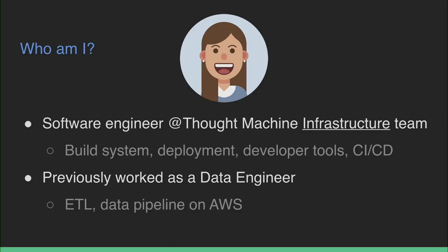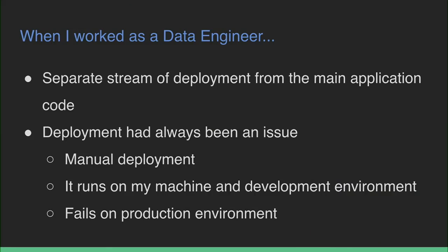At that time I didn't really do much about automated deployments — everything was kind of manual. So here is what happened. I work in a specific data team called Data Labs, and we had a separate stream of deployment from the main applications, including stuff like our front end or our API. Everything was quite separate, and the main issue was deployments. Sometimes things would run on my machine or even in the development environment, but when we promoted to production it just failed.